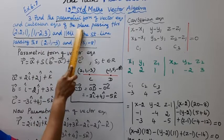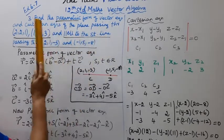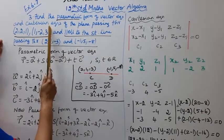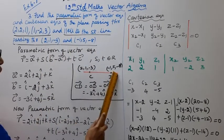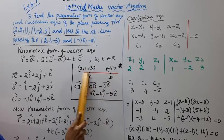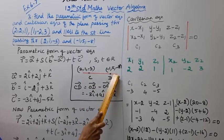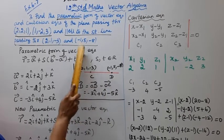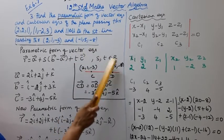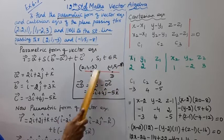Equation of the plane passing through 2 points and parallel to the straight line passing through the points. The points given are (2, 1, -3) and (-1, 5, -8).